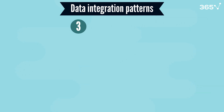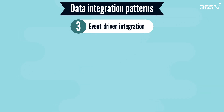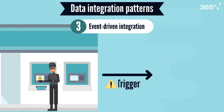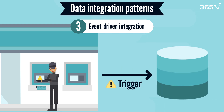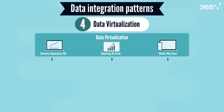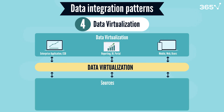Next is event-driven integration. This pattern is designed for situations where data processing needs to be triggered by the occurrence of specific events. For instance, if a potential fraudulent transaction occurs at an ATM, the bank triggers a workflow to quickly confirm the transaction with the customer. And finally, there's data virtualization, which creates a single virtual view of data from multiple sources without physically moving it.